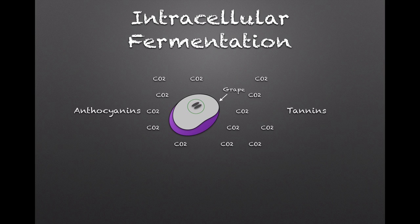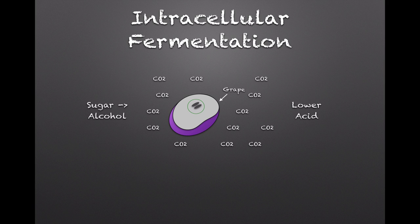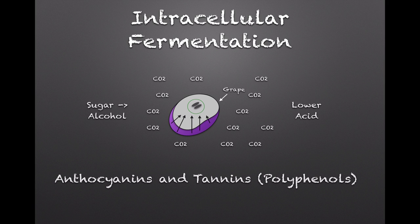For a carbonic maceration, where the polyphenols get into the juice under the influence of carbon dioxide, you need to surround the grape berries with that gas — like in our container with the fermenting juice in the bottom — and something different happens to the juice in the unbroken berries. The grapes absorb the carbon dioxide and begin an oxygen-free and yeast-free fermentation that breaks down the sugars in the grape to create alcohol and also lowers the acidity of the grape juice. While this is happening, the anthocyanins and tannins in the skins make their way into the pulp, turning it a pink, purplish color.